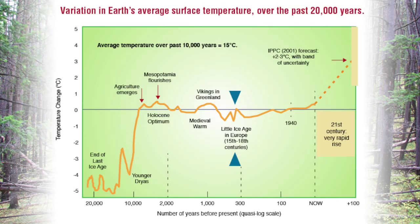Interestingly, church and historical records show that about 75 percent of the northern European population died when we transitioned from the medieval warm period into the mini ice age, due to massive crop failures.